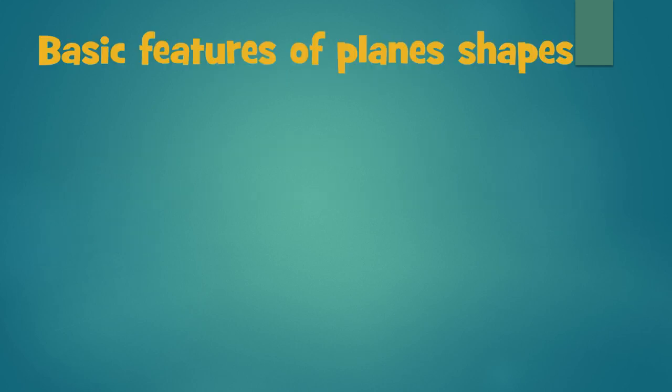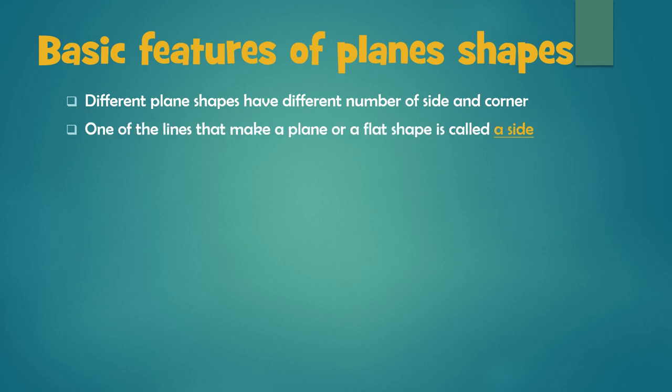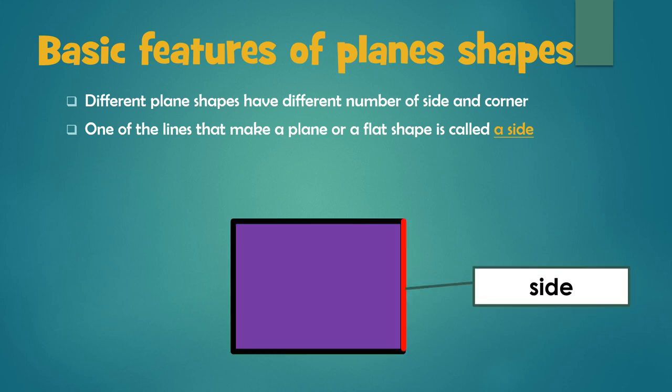Now, we can learn the basic features of plane shapes. Different plane shapes have different numbers of sides and corners. One of the lines that makes a plane or plane shape, we call a side. And the point where two sides meet or intersect, we call a corner.